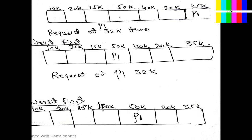In Worst Fit, instead of searching for the first one, we search for the largest one among the entire list. Among 10K, 20K, 15K, 40K, 50K, 20K, 35K — the largest is 50K. So I allocate to the 50K hole. According to First Fit I would allocate at the first capable block (40K here), but according to Worst Fit I must allocate to the largest hole available in the entire memory, which is 50K.